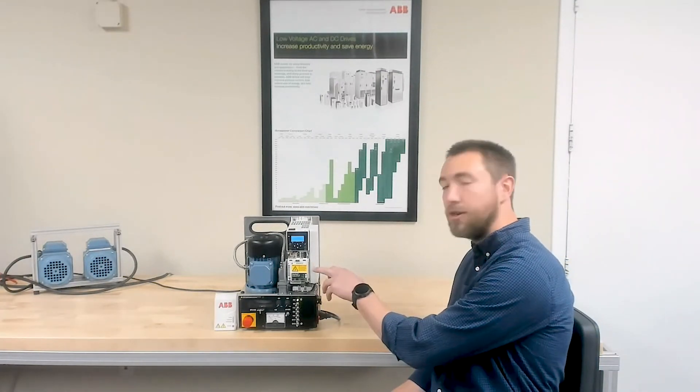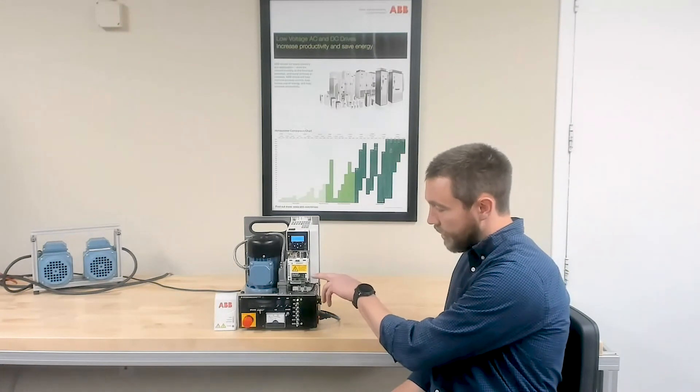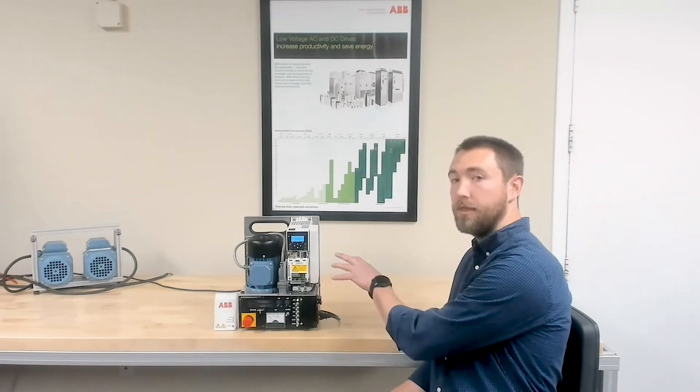Now that Andrew has the parameters set up for the Ethernet communication module, we've got a blinking light here showing that it's communicating with the VFD. Next up is setting up the communication on the Allen Bradley PLC side. Tune into our next video to see how to get that done. Thanks!